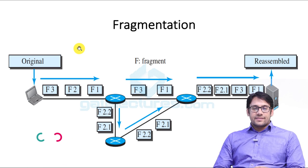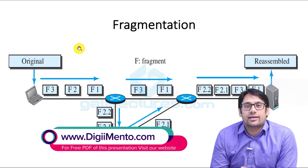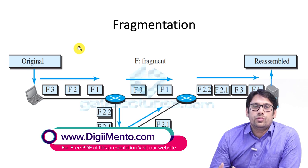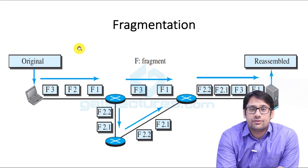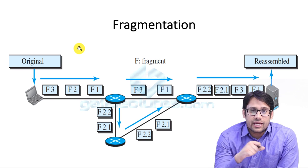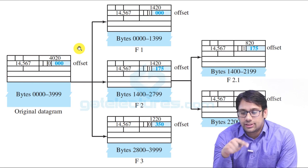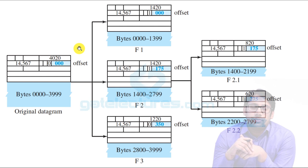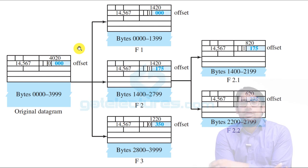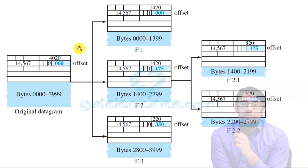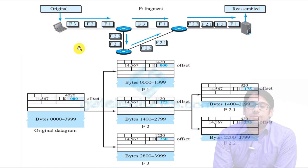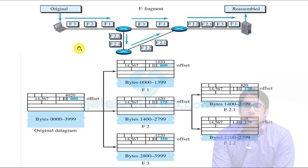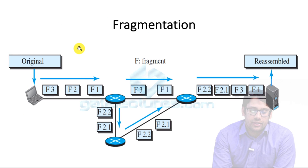In the previous video we were discussing the IP datagram, and we are now discussing the second row which is about fragmentation. You must have a diagram on your screen — draw this diagram on your notebook and also draw these tables, because once you draw this, I will be able to make you understand each and everything more clearly. Draw both of these things on one single page and pause the video.